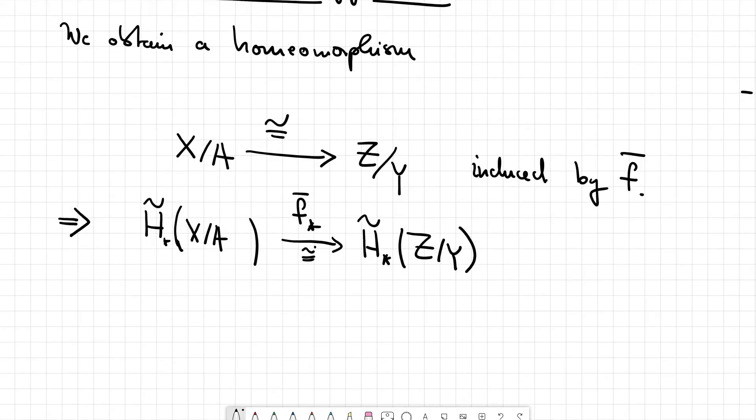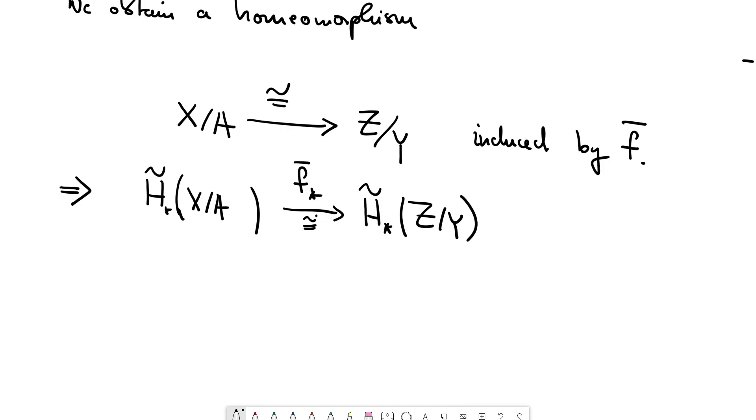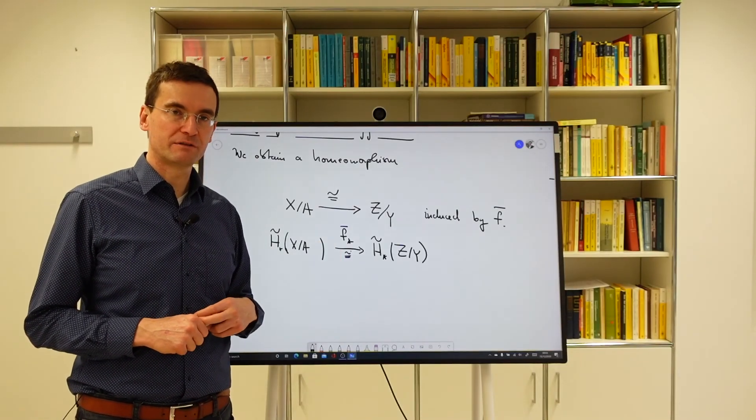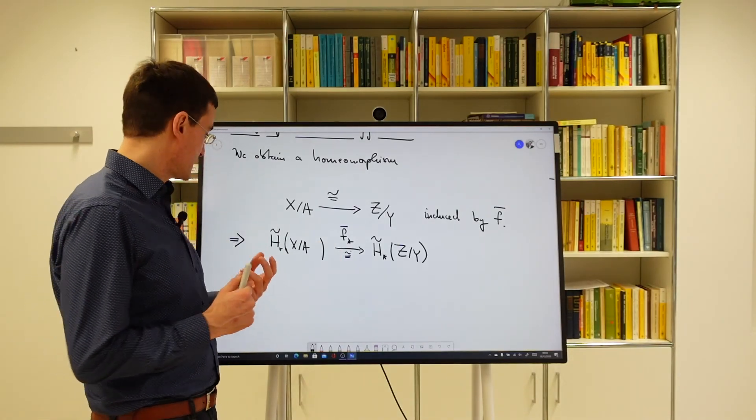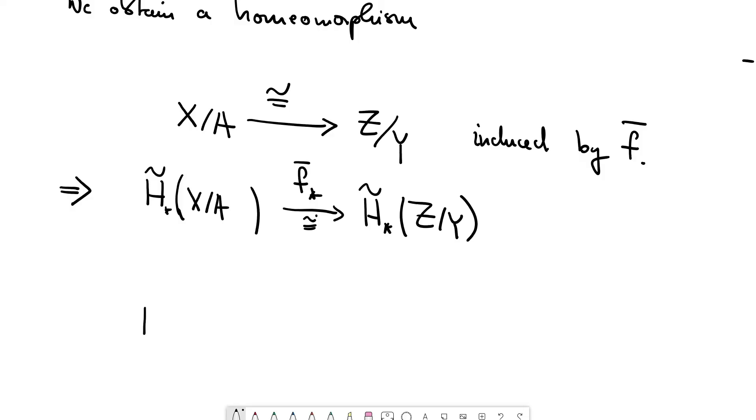We might also put tilde here and look at the reduced homology. And we so far haven't used the fact that A inclusion into X is a closed neighborhood deformation retract, but we use it now because we have shown that in that case, this relative homology is the same.